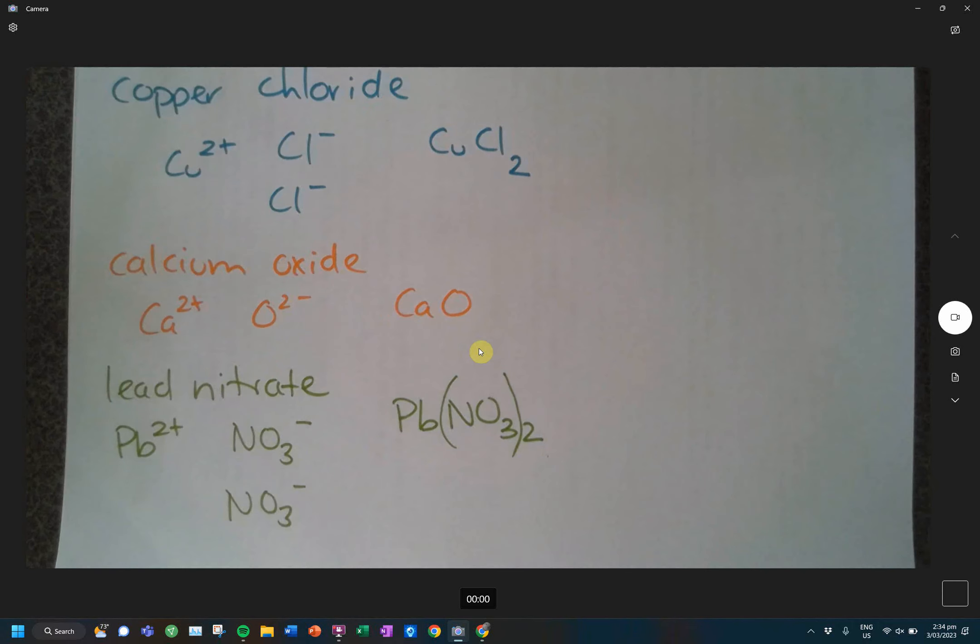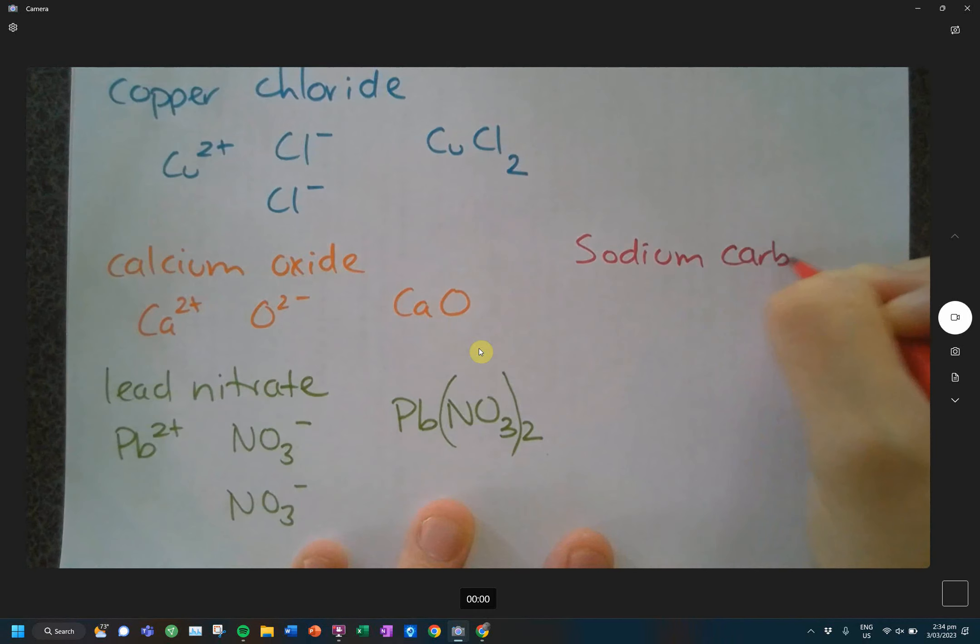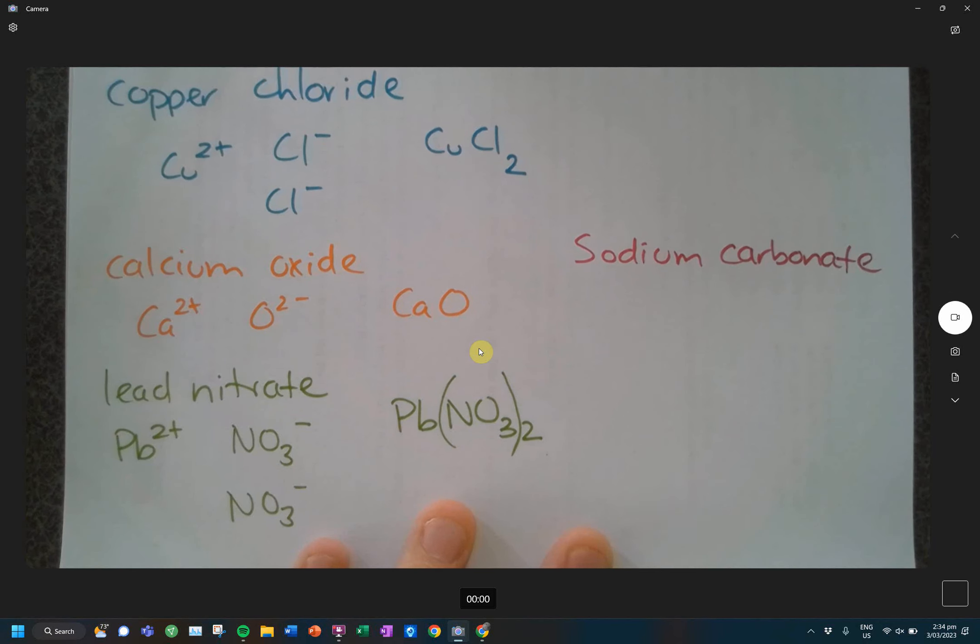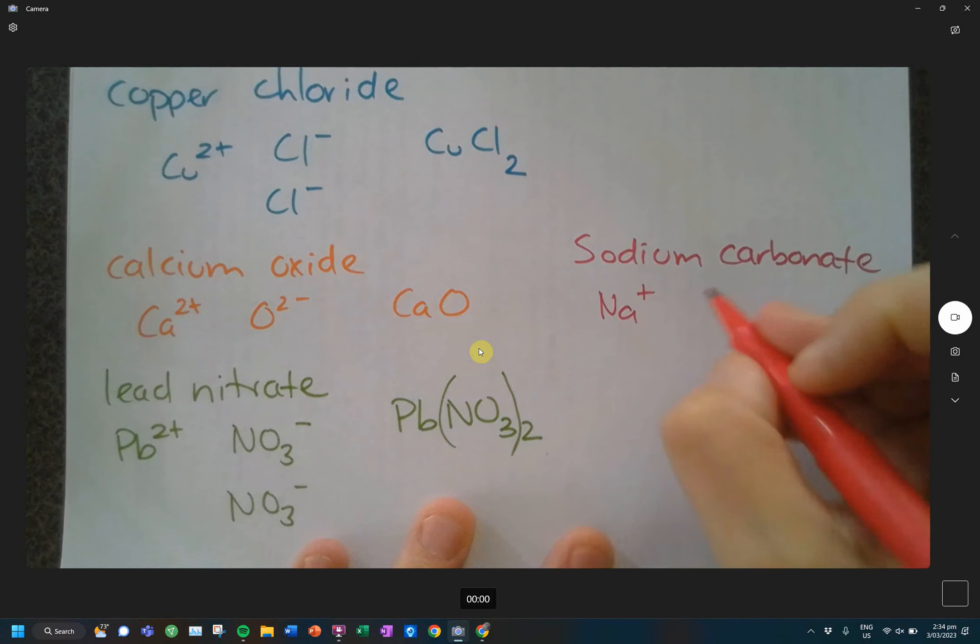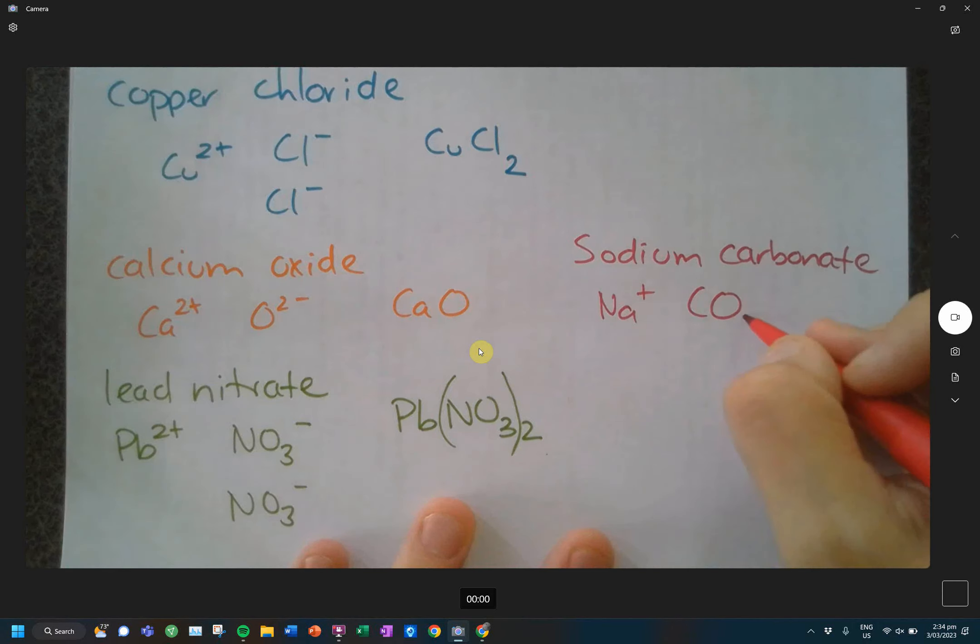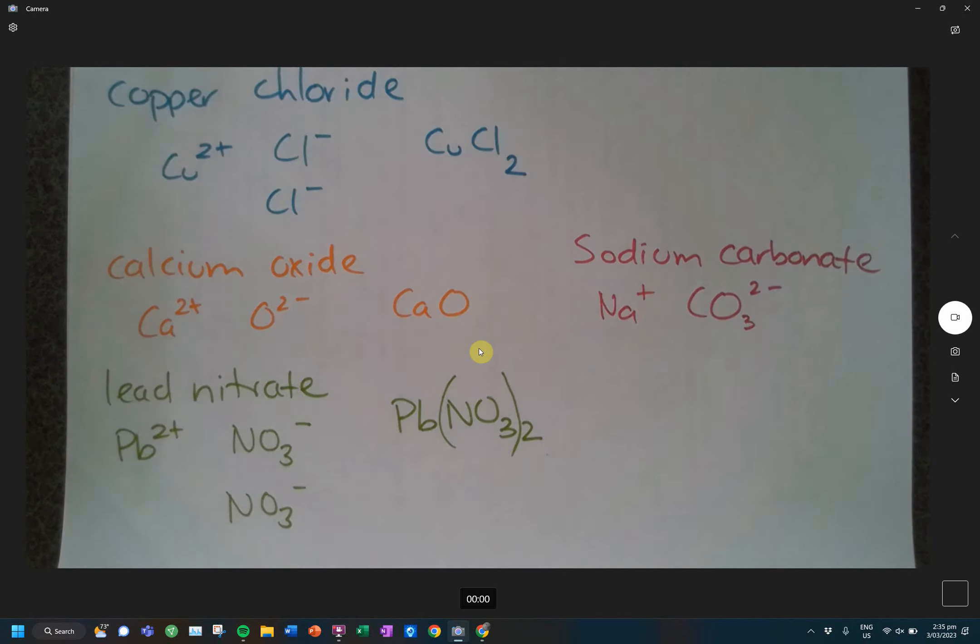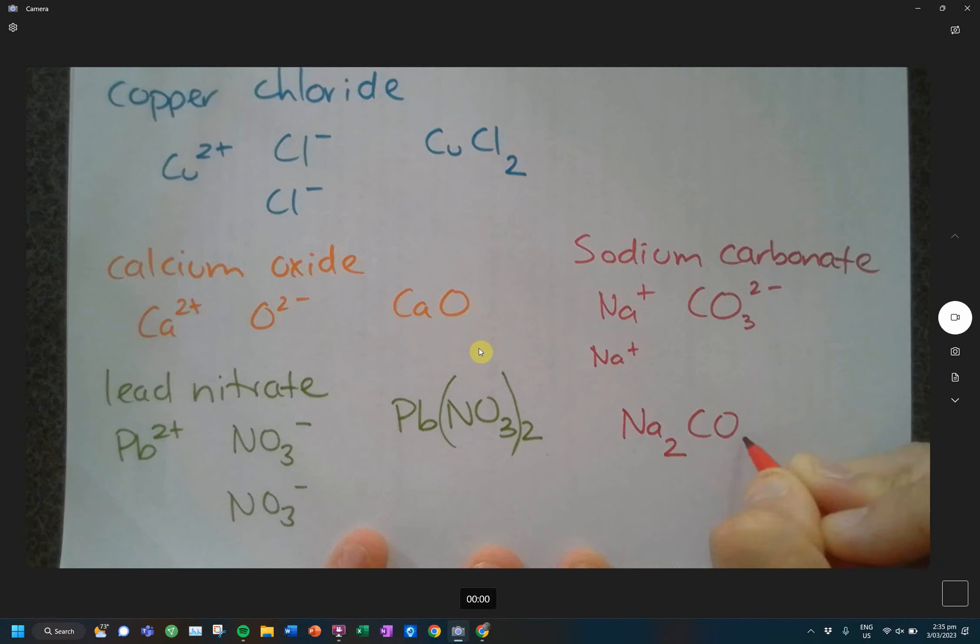I'll give you one more, and hopefully with the range that I've given you, you'll be ready to go. The last example that I have for you guys was sodium carbonate. So, sodium we've done before. Na+. Carbonate? CO3 2-. What do I need? Two sodiums. So, then I would write Na2CO3. I don't need to put the carbonate into brackets because there's only one of them. So, that can be left alone.